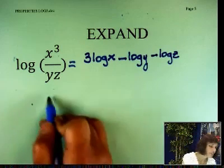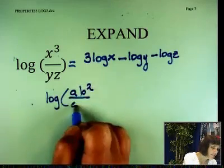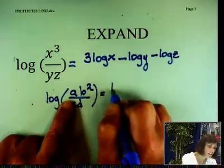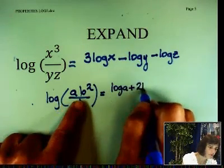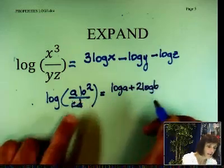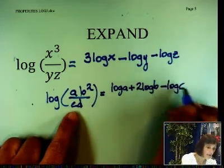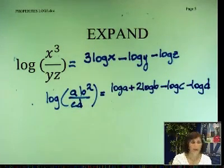So let's do another one. Let's say like log of A B squared over CD. Here it is. Log A plus, because this is in the numerator, 2 log B. These are in the denominator, minus log C, denominator minus log D.